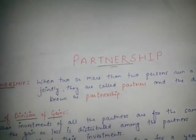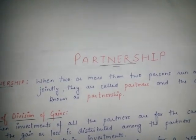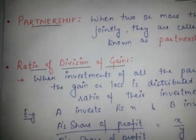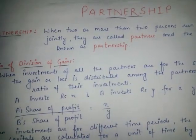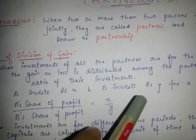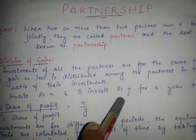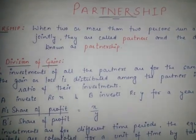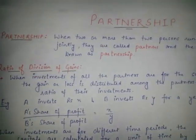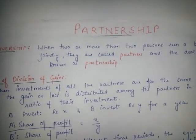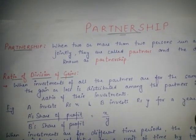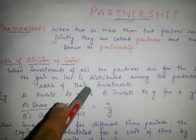For solving questions on partnership, we have to remember two rules. The first rule is the ratio of division of gains. Suppose A and B invest money for the same period — when partners invest for the same period, the gain or loss is distributed among the partners in the ratio of their investment.